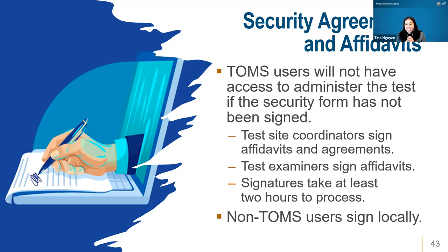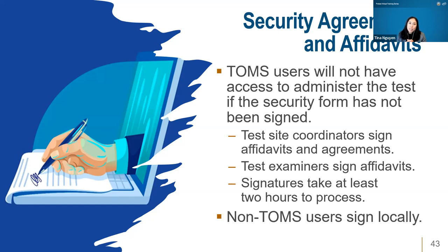These forms are paperless and easy to sign. The first time you log into TOMS, a prompt will appear to read and sign the digital form. Test coordinators have two signatures: the test security affidavit and the test security agreement. Test administrator or test examiner roles sign only one document — the test security affidavit. You can monitor test security signatures by running the security forms and remote administration status report in TOMS if you're an LEA or site test coordinator. This report shows who has and has not signed, and the time of signature. For roles that interact with secure materials but don't need TOMS access — such as janitorial staff or classroom aids — there is a PDF they can download and complete locally; there is no longer an online form for non-TOMS users.